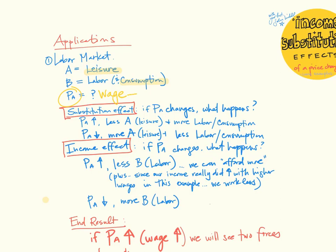So we want to think about what happens when that price of leisure changes. The substitution effect leads us, if the price of leisure changes, what do we see? The price of A, or in this case, leisure rises, we're going to do less A, right? Less of the thing that is relatively more expensive and more labor.